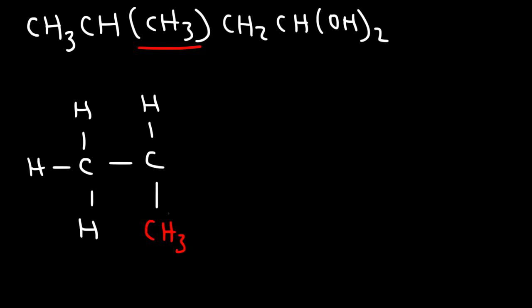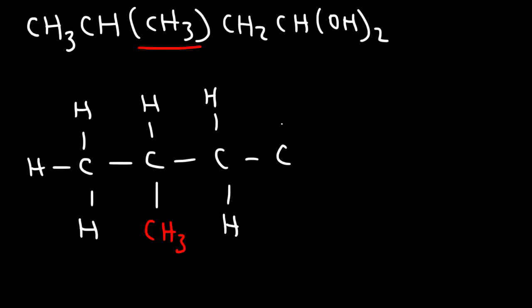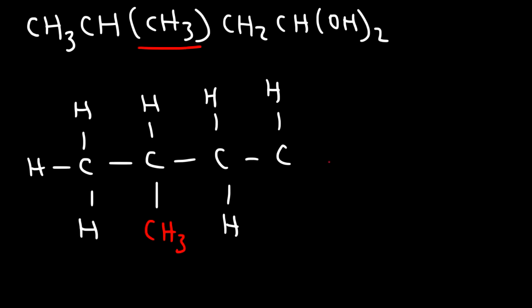I'm going to highlight that CH3 in red. And then after that, we can place the CH2 group in the middle of the chain. And then we have a CH — a carbon with one hydrogen atom — and that carbon is attached to two OH groups, which I'm going to highlight in red. And so that's the Kekulé structure for this particular condensed structure.